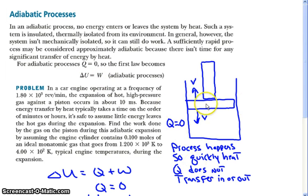If you look at the diagram here, you're either going to expand or compress the gas so quickly that Q equals zero, and all of the change in internal energy inside the gas happens because of the work done on or by the piston.